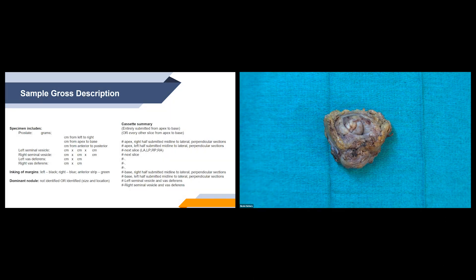A sample gross description of a prostate gland includes what the specimen contains — prostate, left and right seminal vesicles, right and left vasa deferentia — the inking code, main findings such as whether there is a dominant nodule, and a cassette summary indicating whether the specimen was submitted entirely or every other slice. We start by submitting the apex right half and apex left half, then indicate how each mid-prostate slice was submitted in clockwise fashion: left anterior, left posterior, right posterior, right anterior. Then we submit the base right half and base left half, followed by the left seminal vesicle and vas deferens and right seminal vesicle and vas deferens.